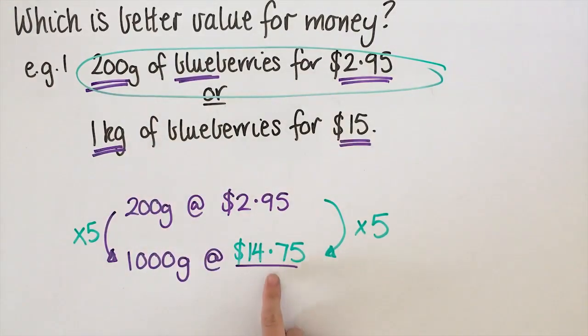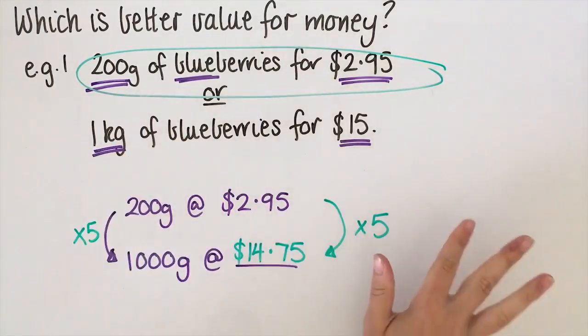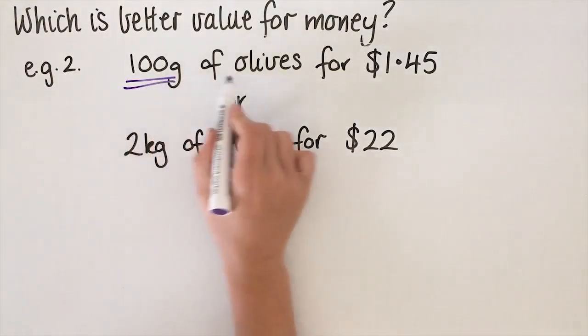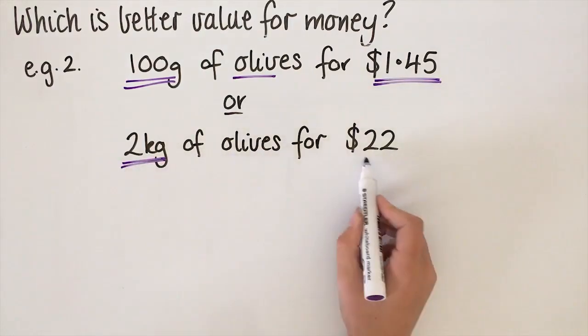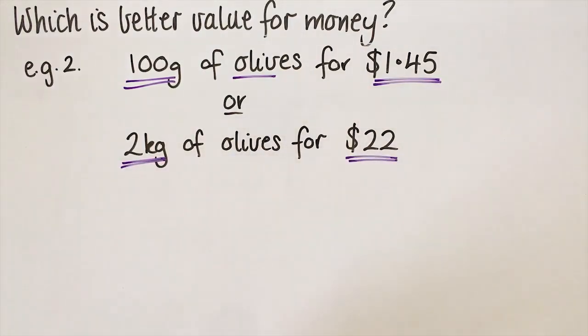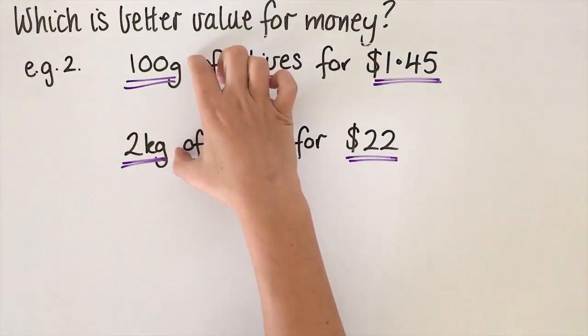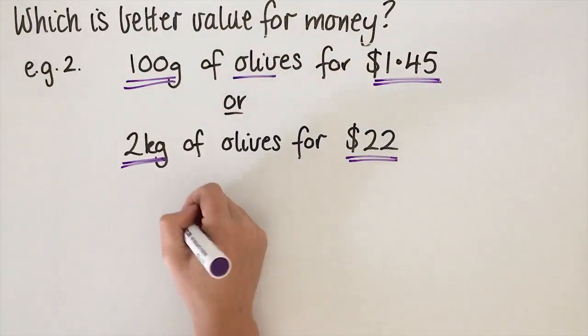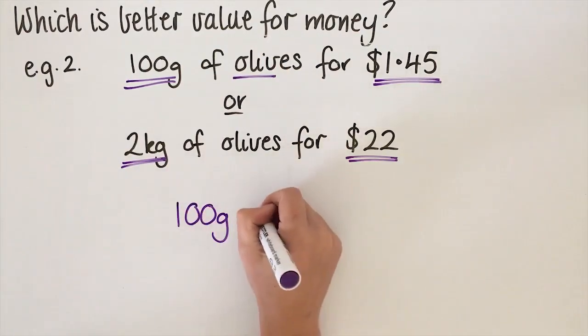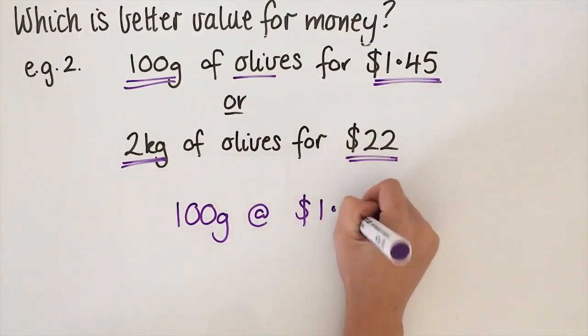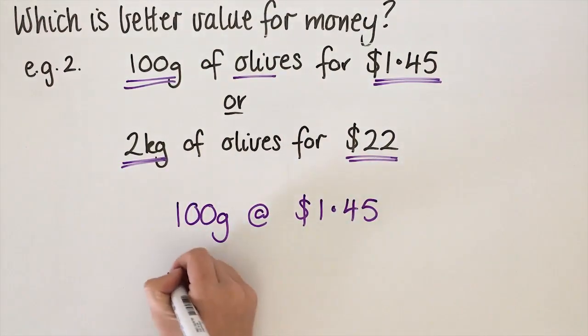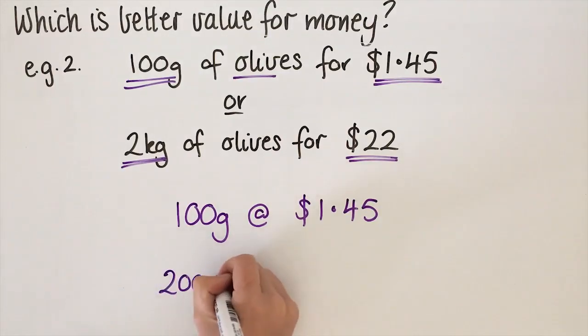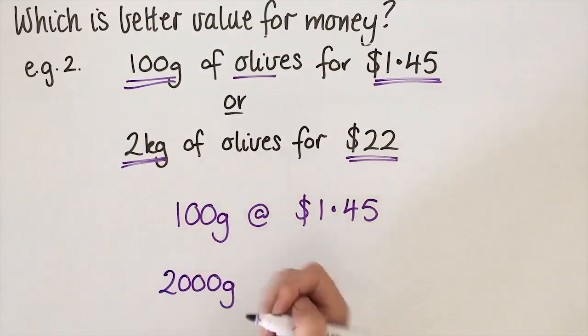In this second example, we've got 100 grams of olives for $1.45 or two kilos of olives for $22. So what we're going to do is make the volume the same. We've started with 100 grams at $1.45, and we want to turn that into two kilos, which is 2000 grams, and we don't know what that price is.